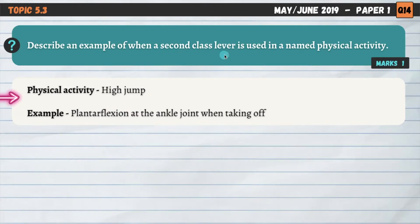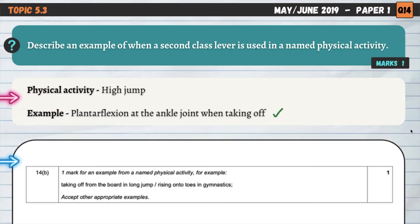The best example of a second class lever in the body is probably at the ankle joint. So that's why I've gone for something like high jump when we're clearly going to have an action at the ankle joint there. And my example of when it's used is plantar flexion, or the pointing down of the toes, occurs at the ankle joint when taking off in high jump. So when we take off in high jump, we push off our toes, we move into a plantar flex position, and that is an example of that second class lever at the ankle joint in action. The mark scheme says one mark for an example for a named physical activity. The one they've provided is taking off from the board in long jump, which is very similar to the example I've provided here. Again, that would be plantar flexion at the ankle joint, and then rising onto the toes in gymnastics.